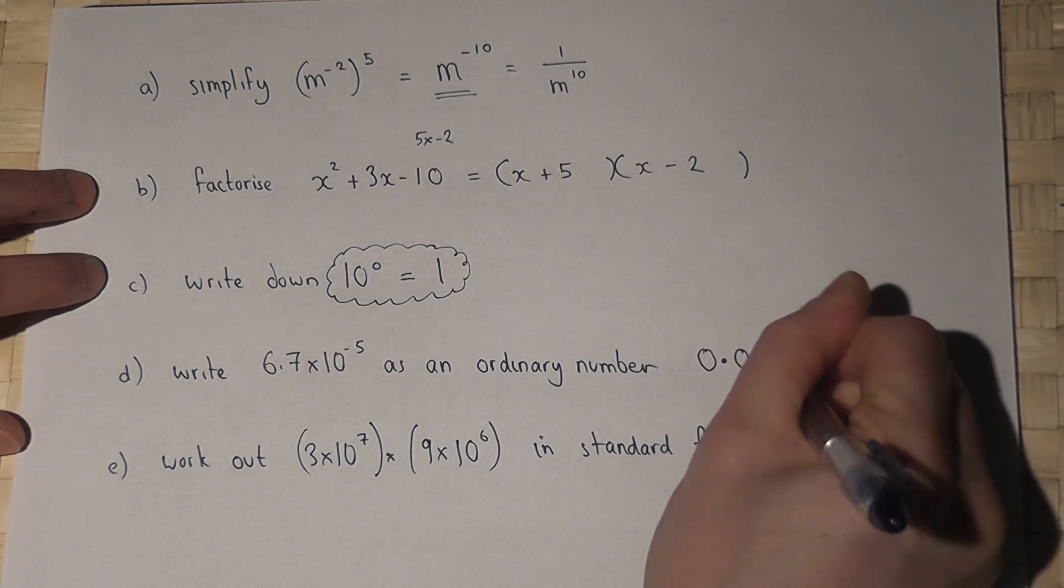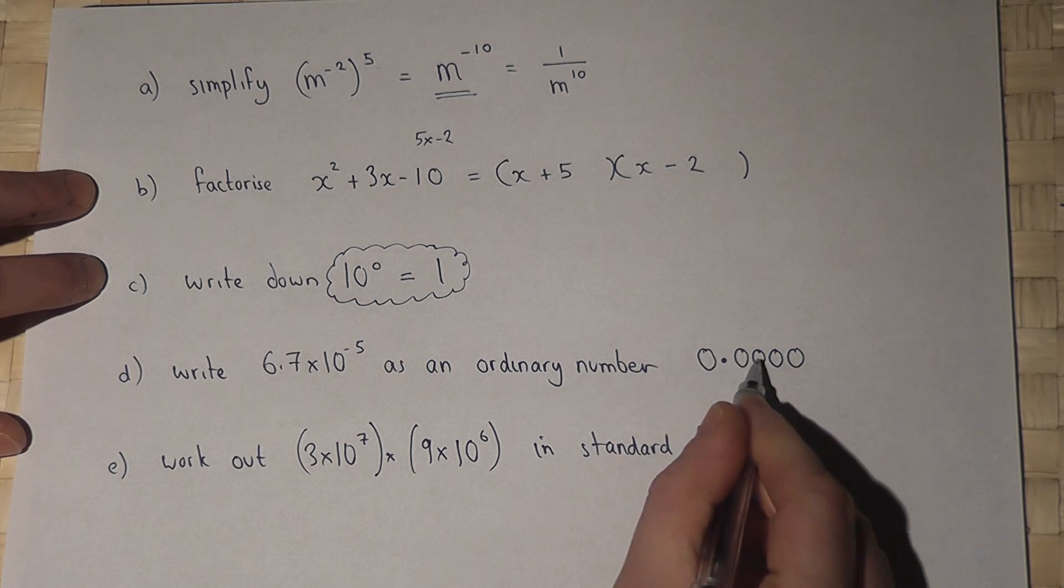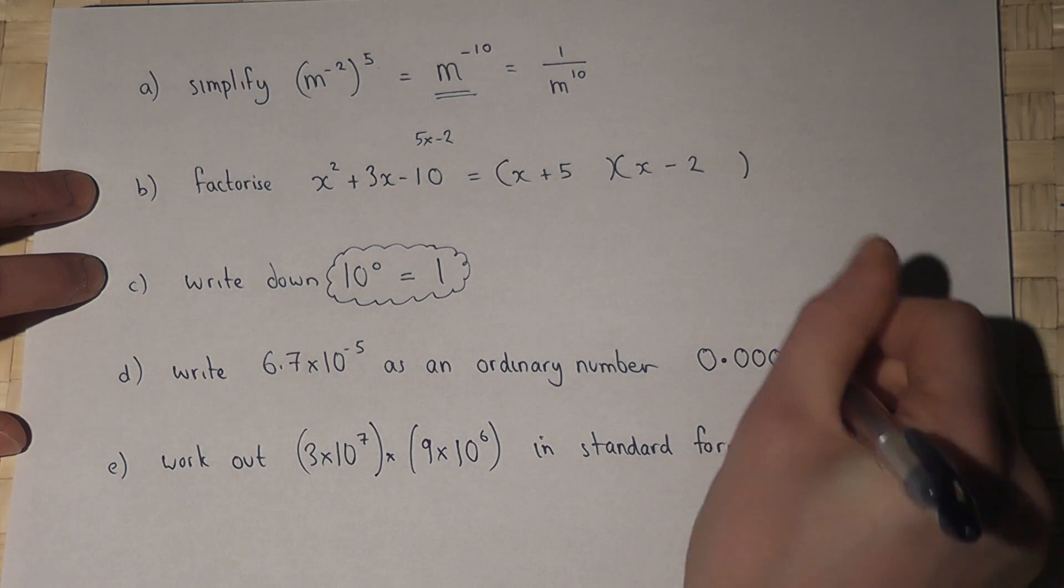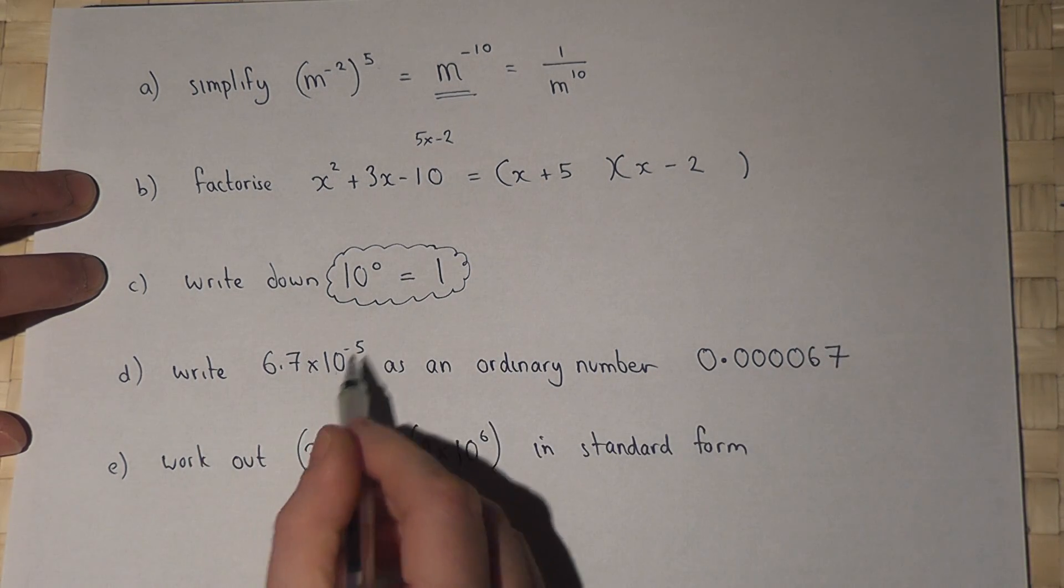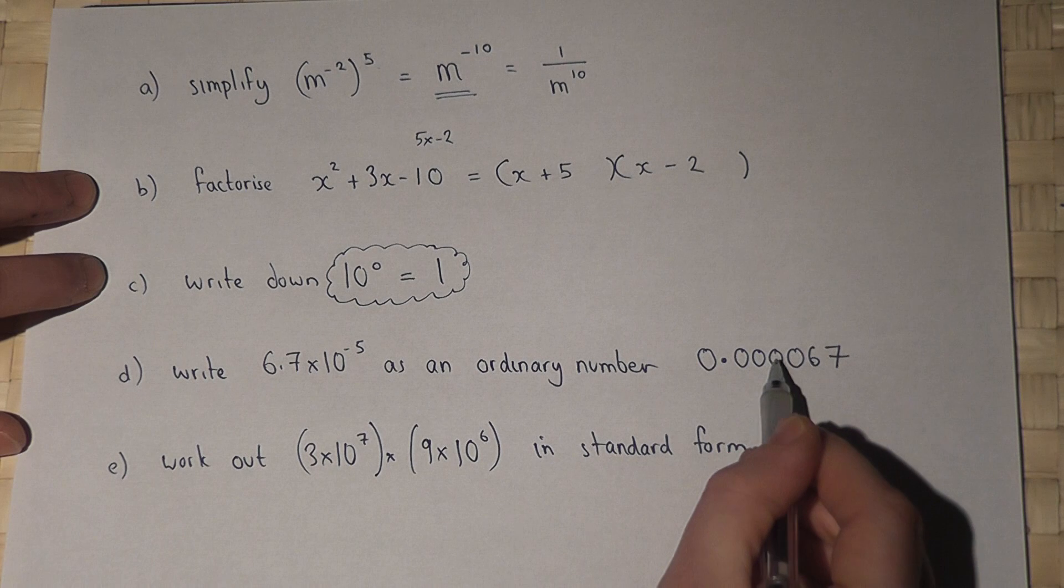One, two, three, four, five, and write down your number at the end. So 6.7 times 10 to the power of minus 5 is 0.000067.